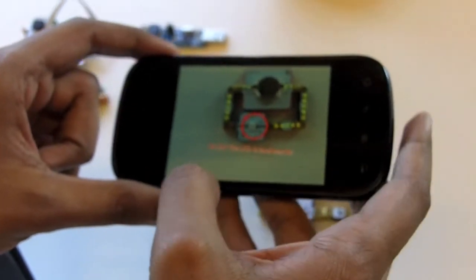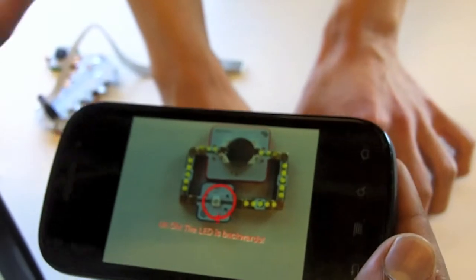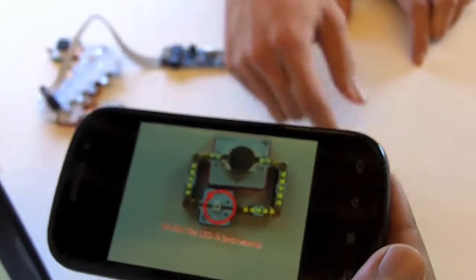So in this case the LED is backwards. The app can recognize that and displays a message. It also shows that there's no current flow, because in this case there is none.